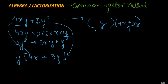Now let us look at these two factors. Y is already in its lowest state — we cannot reduce it any further. And 4x plus 3y is also in its simplest form because we cannot take anything common out of these two terms, and neither are the terms like terms that we can combine. So this form is known as the factor form.